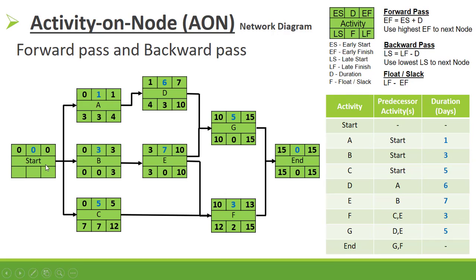The late finish values feeding into Start are 3 (from A), 0 (from B), and 7 (from C). In the backward pass we use the lowest late start, which is 0. So Start: float = 0 - 0 = 0, late start = 0 - 0 = 0.